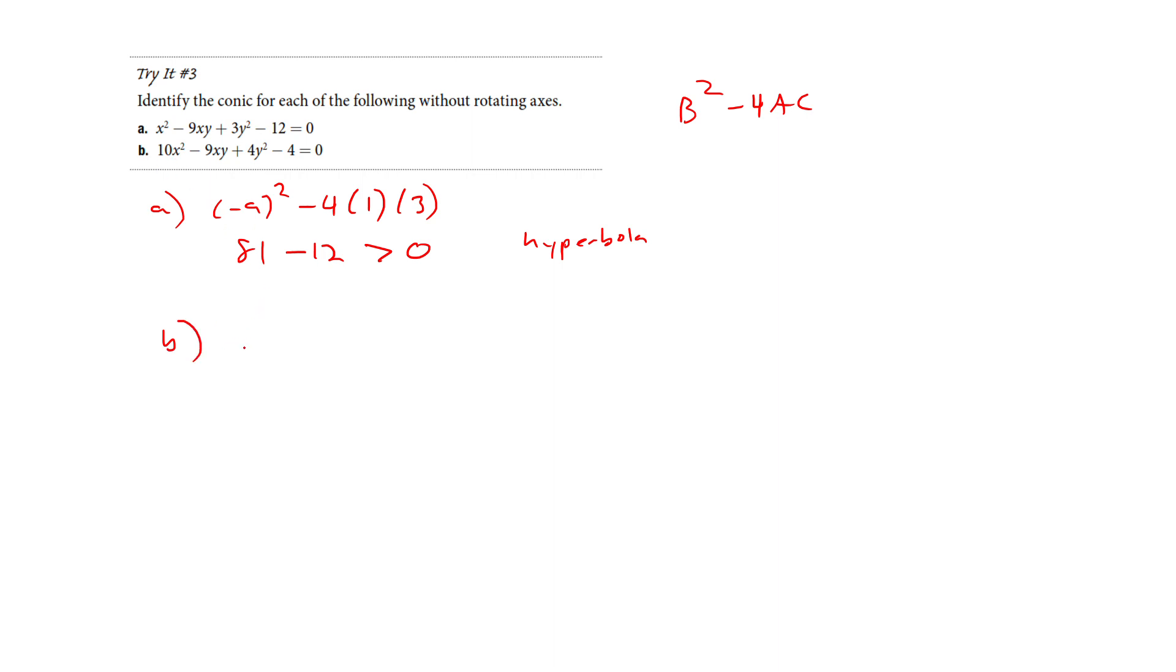Now let's try again for this one here. So b squared is going to be, once again, negative 9 squared minus 4ac. So we've got 81 minus 80. So we're going to be greater than zero. And once again, we get a hyperbola.